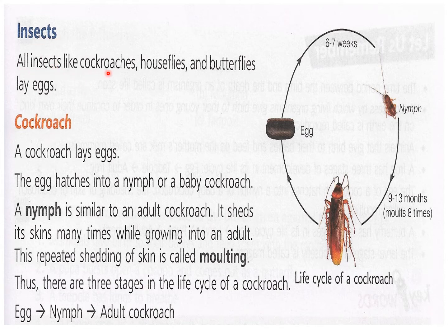All insects like cockroaches, houseflies, and butterflies lay eggs. You all know that insects, reptiles, fishes, and birds — all these lay eggs. So now we will see the life cycle of a cockroach.